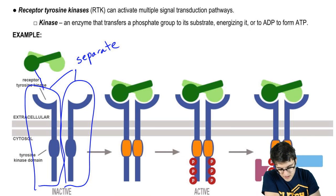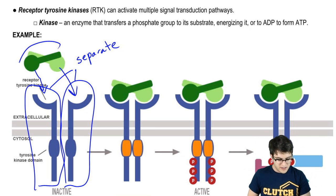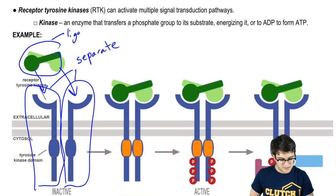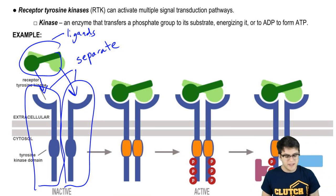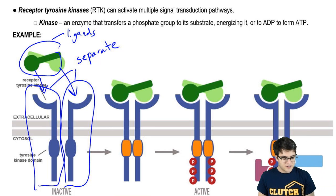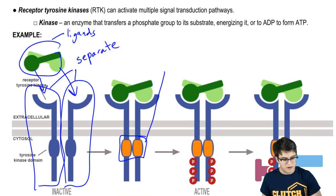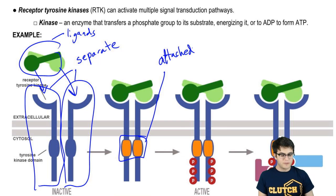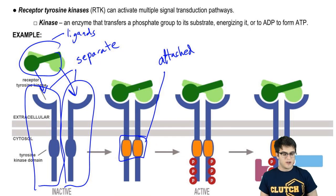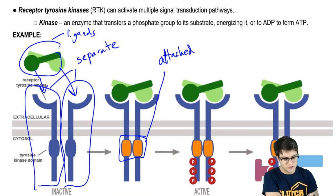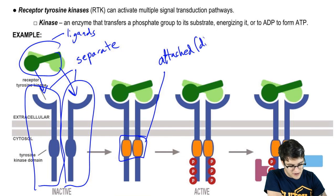What's going to happen is they're going to bind these ligands, and that's going to cause them to become attached. So now these are attached. We call this whole receptor, when they're attached, a dimer. When two proteins come together to form a functional unit, we call that a dimer. Here they're attached — they are now a dimer.